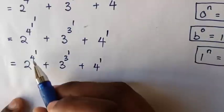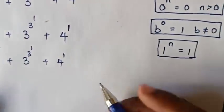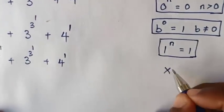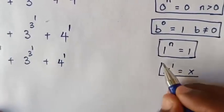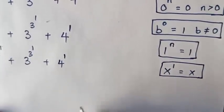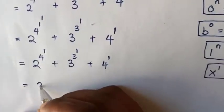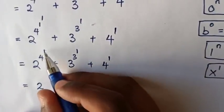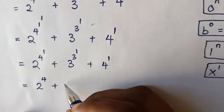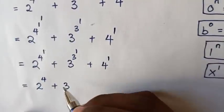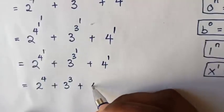Here 4 power of 1, 3 power of 1, 4 power of 1, we will apply this rule. It will be equal to 2 power of 4 power of 1 is 4, plus 3 power of 1 is 3, plus 4 power of 1 is 4.